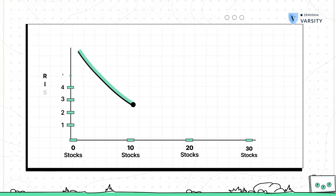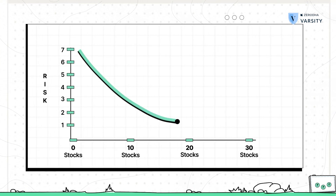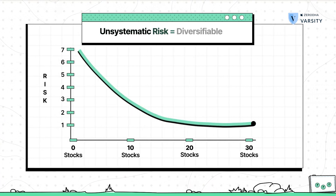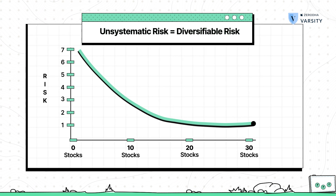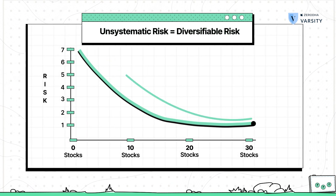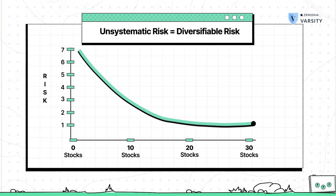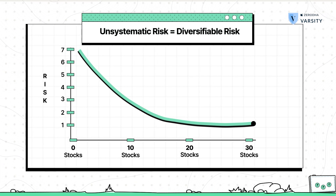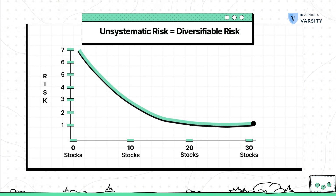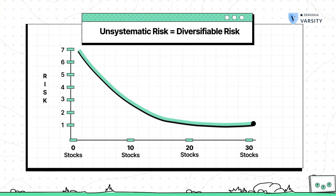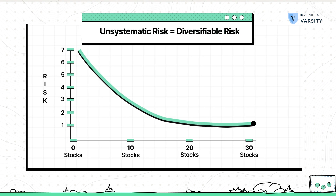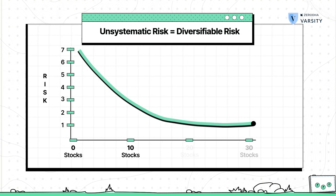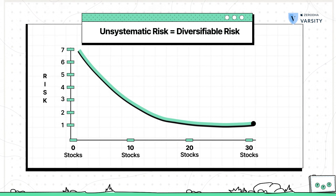Here is how the graph looks: as you add more stocks, unsystematic risk — which is the diversifiable risk — starts to reduce. But beyond a certain number of stocks in your portfolio, diversification does not add much value. This number is somewhere between 20 to 30 stocks in your portfolio.